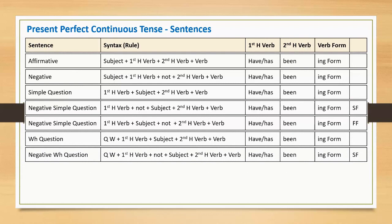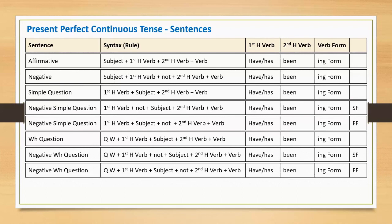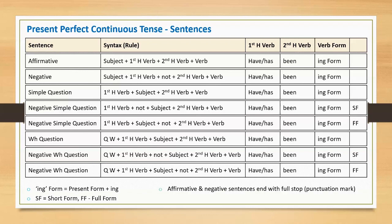A present perfect continuous negative WH question starts with a question word or phrase, followed by the short form of the first helping verb and 'not', subject, second helping verb, and main verb. ING form is the present form plus ING, that is the fourth form. SF stands for short form and FF stands for full form. As a thumb rule, affirmative and negative sentences end with a full stop, while simple and WH questions end with a question mark.